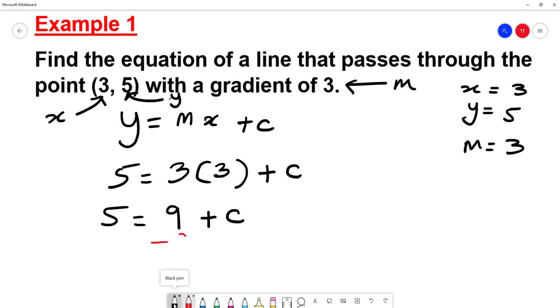And then we're going to minus 9 on both sides of the equation. And that gives me C = 5 - 9, which is -4.